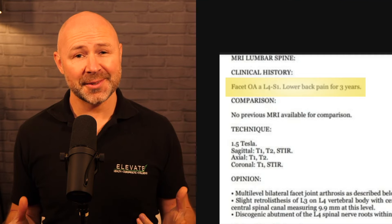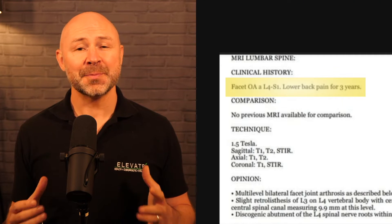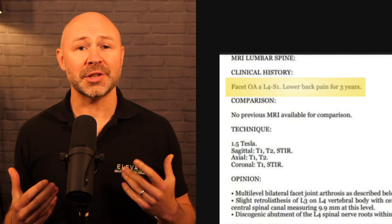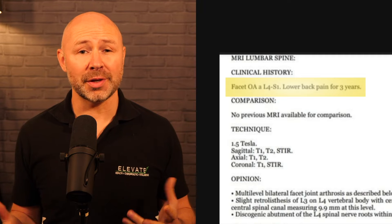With reports I always start at the clinical history because that's going to give context to the findings in the report we're about to read. I've highlighted this section for you on screen now. The history is not extensive in this report in all honesty. It says we've got facet OA, which is degenerative joint disease, and that the client has had low back pain for three years — so not loads to go on. I personally would have liked to have seen a bit more detail in the history so that all the information we need is right there on one page.